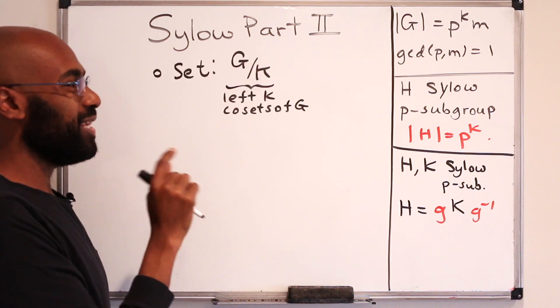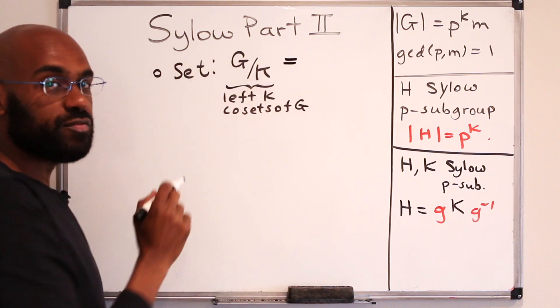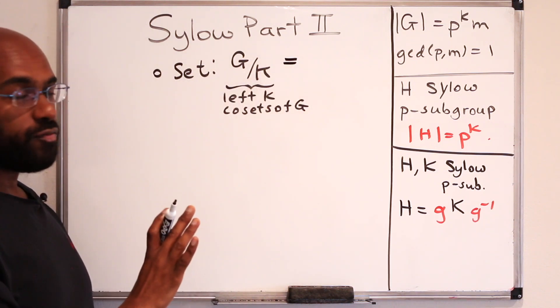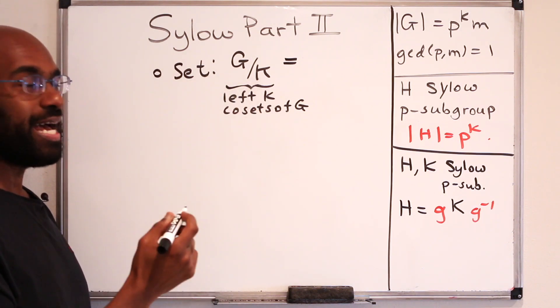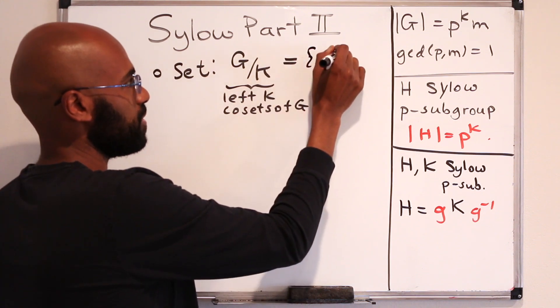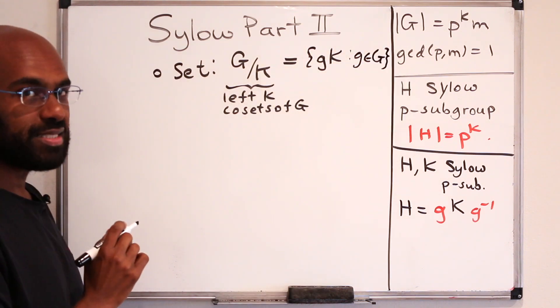So our underlying set is going to be the set of left K cosets of G. I'm going to use this notation for it. Now, let's be careful. K is not necessarily a normal subgroup, but we can still use this notation to denote the left K cosets. So that looks something like G, K over all G in the group. All right, so that's the set we're going to deal with.